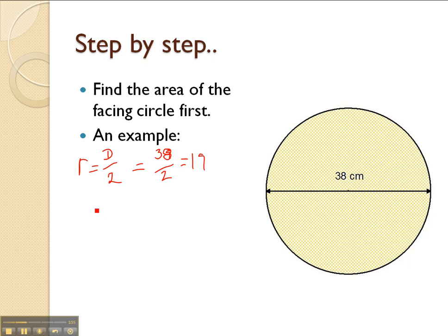As I said, the area of a circle is equal to pi times the radius squared. That would be pi times 19 squared, which would be equal to pi times 361.